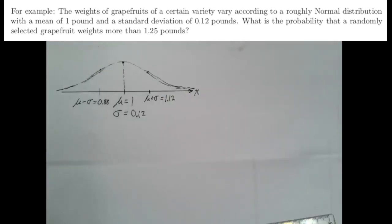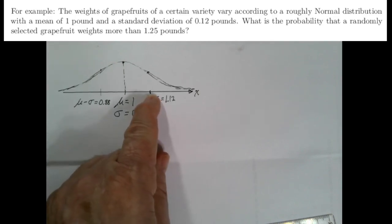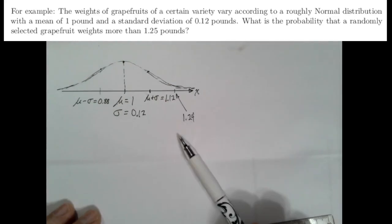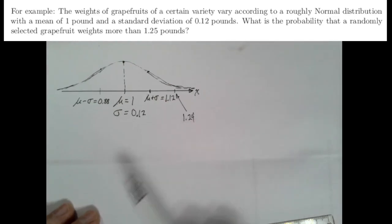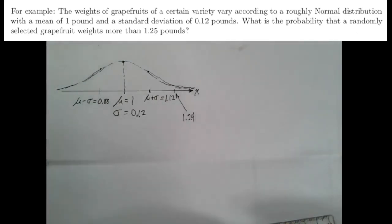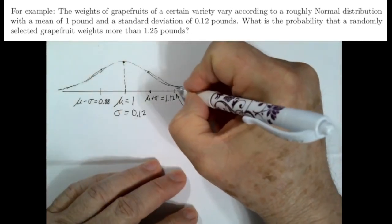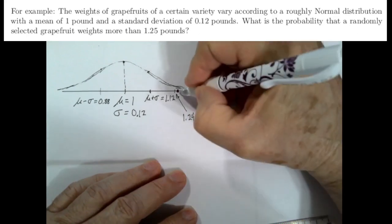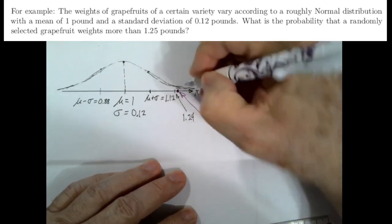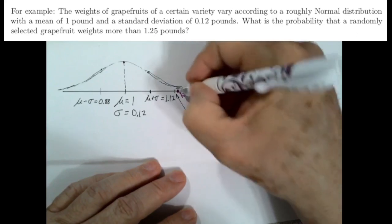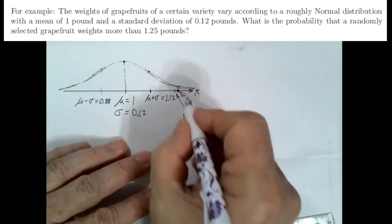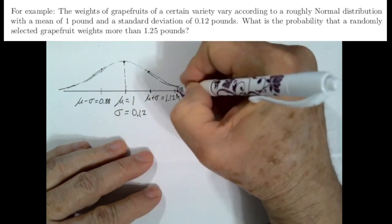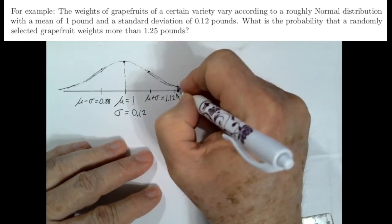There are some other points we know here. We know this point at 1.12, and another standard deviation above that would be 1.24 pounds — that's two standard deviations above the mean. We're interested in the point very close to 1.25, and we want the probability that the weight is more than that amount — this little tiny area up here.